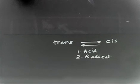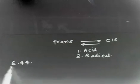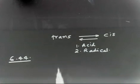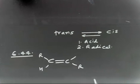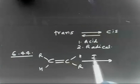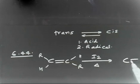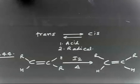This problem is related to radical catalysis. Problem 6.44 says: suggest a radical mechanism to account for the interconversion of cis to trans isomer on heating with I₂. So you have a trans isomer of a stilkene — you have R and H on one carbon, H on the other — and if you heat this with I₂, you can convert trans into cis.